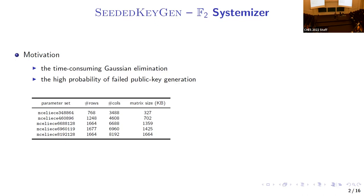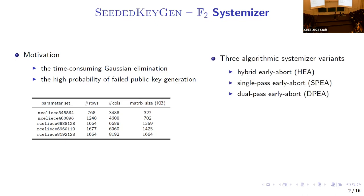It is not necessary to compute the complete reduced row echelon matrix if it cannot be systematized — we can abort early if no pivot row is found on the left diagonal. They present three algorithmic systemizer variants that preprocess the left square part of the matrix to detect systemizability: hybrid early-abort (HEA), single-pass early-abort (SPEA), and dual-pass early-abort (DPEA). All designs outperform prior art by about two times in average runtime and time-area efficiency.